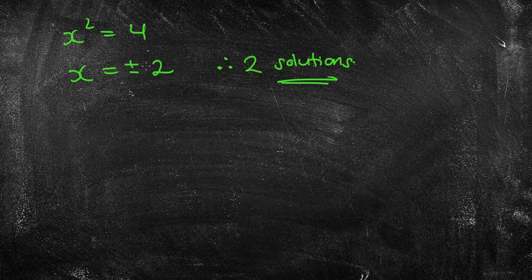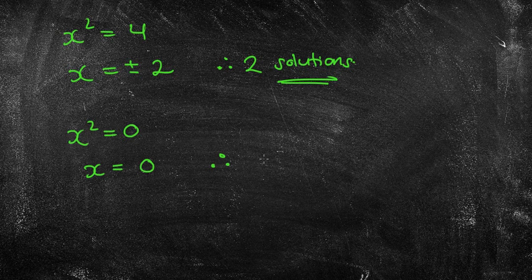There is a time, for example, maybe x squared equals 0. So if I square root 0, what do I get? Well, we don't really get plus or minus 0, do we? We just get 0. So in that case, we would say that there would be one solution.